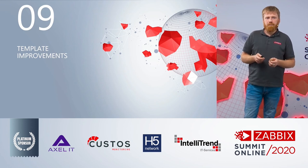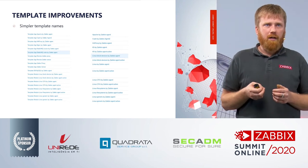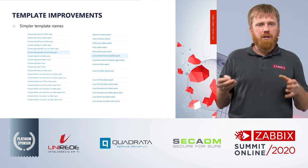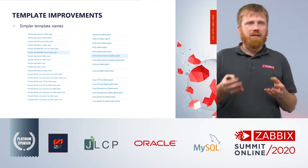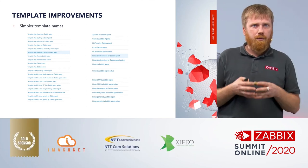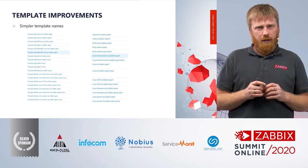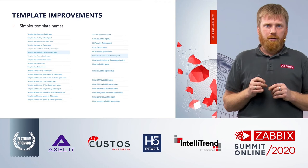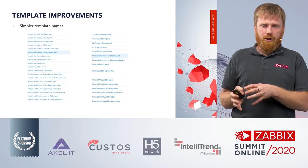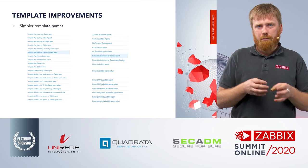Some template improvements. First, we have renamed lots of templates. You can see on the left side the previous names — they always include 'template', maybe 'app', maybe 'module', and a very long name, which was becoming very hard to read. On new installations we have renamed them — the right side screenshot shows how templates will be called now. But if you upgrade to Zabbix 5.2, you will not see this because during an upgrade we do not touch your data. If you want to use the new names on an upgraded installation, you need to either rename them yourself or download and import them.